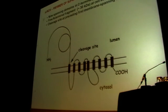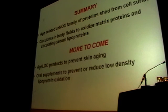So, in summary, the age-related ARNOX family of proteins are shed from the cell surface, and they circulate in body fluids to oxidize the matrix proteins and circulating serum lipoproteins.